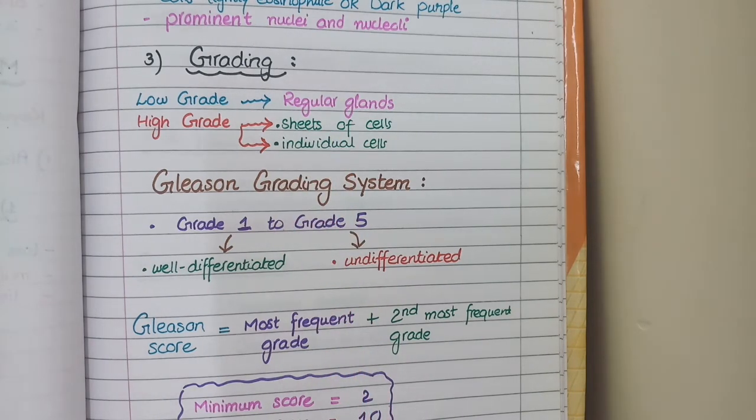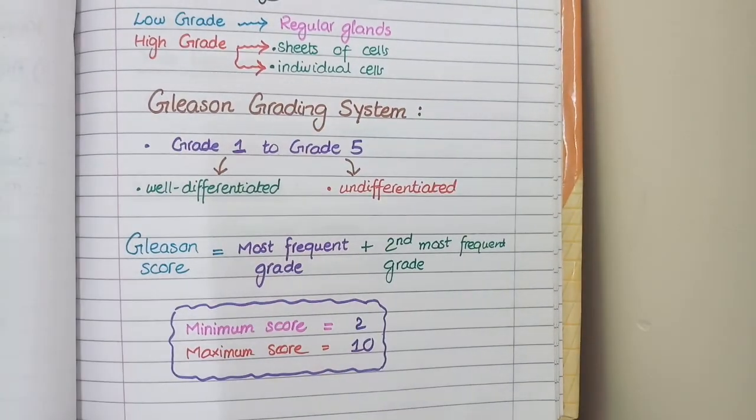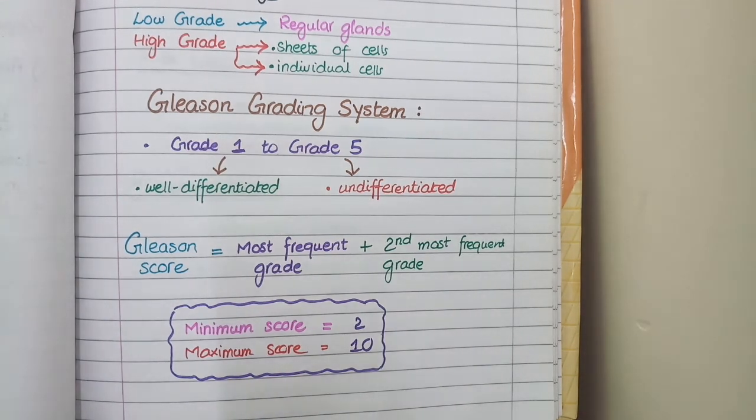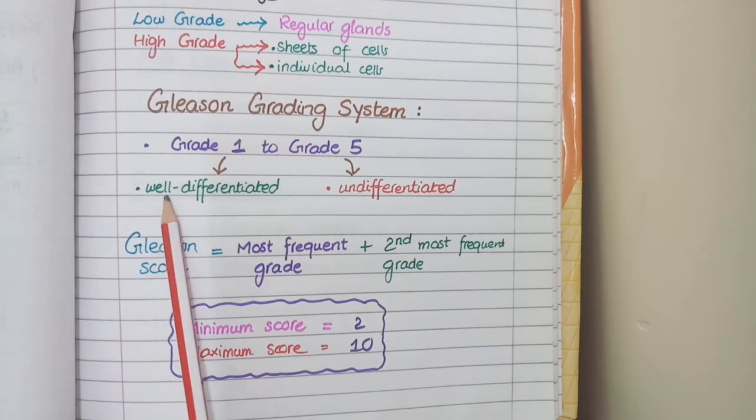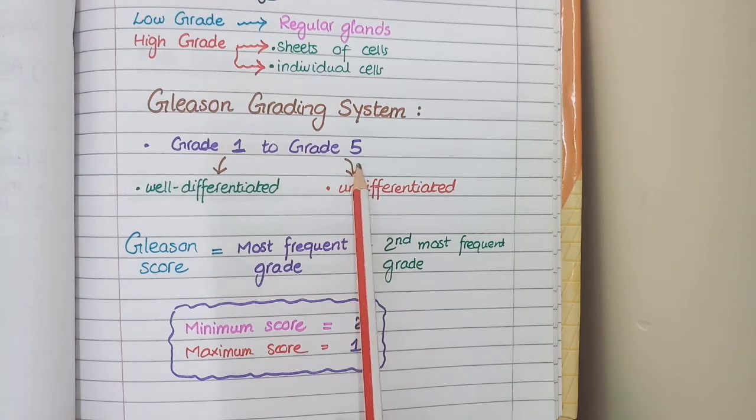Now applying this basic information, we use a well-defined specific system for grading of prostate carcinoma that is called Gleason grading system. And this is very important both from examination point of view as well as practical point of view. Basically, the Gleason grading system comprises of two steps. In the first step, you see multiple regions of the slide under microscope and grade each region on the basis of degree of differentiation. The most well differentiated regions are given grade 1 and most undifferentiated regions are assigned grade 5. And the tumors with intermediate grades of differentiation are labeled grade 2, grade 3, grade 4.